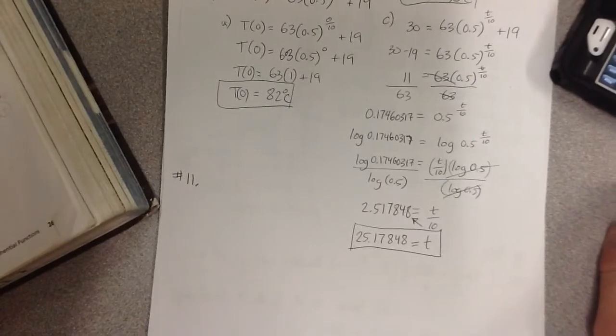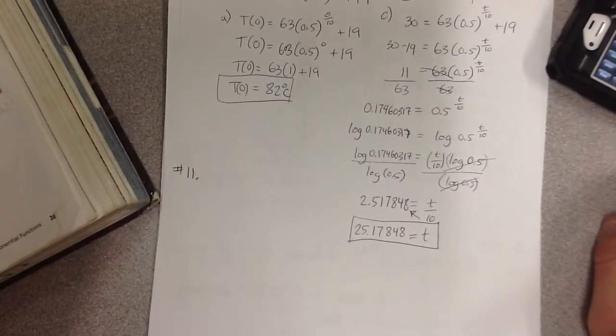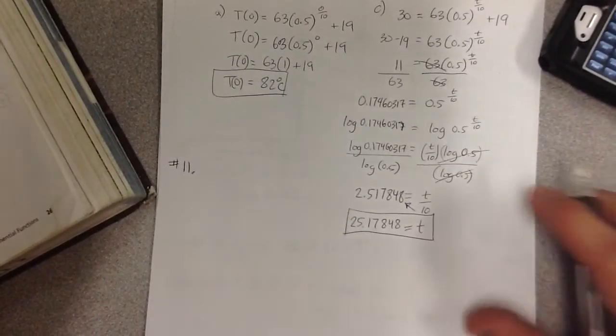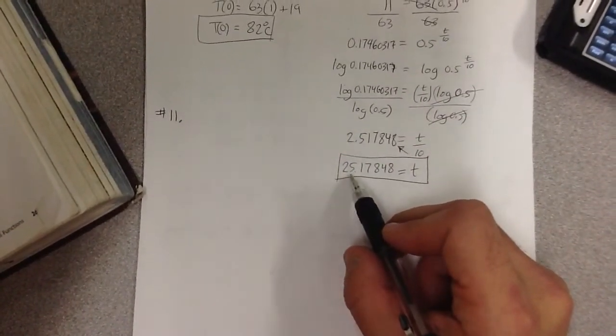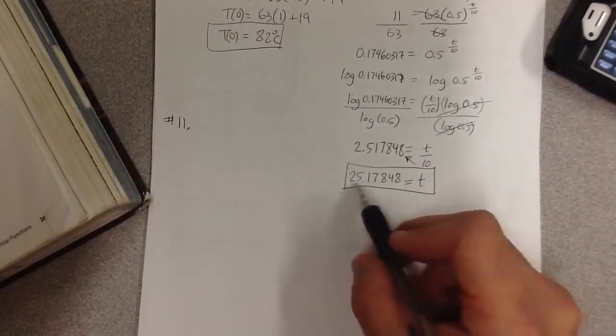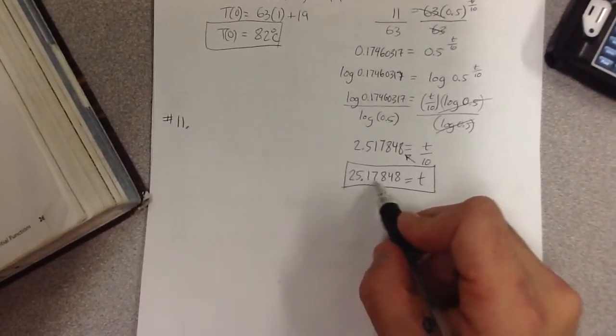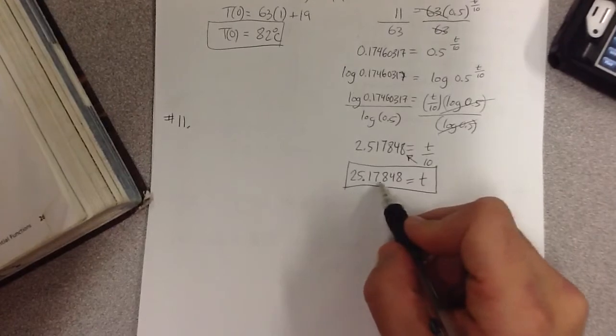And again, it asks us, how much time did it take for the sandwich to reach an internal temperature of 30 degrees Celsius? Well, it took approximately 25 minutes. So 25 minutes later. Well, a little bit more than 25 minutes. Of course, you can convert this. Remember, that's not 17 seconds.